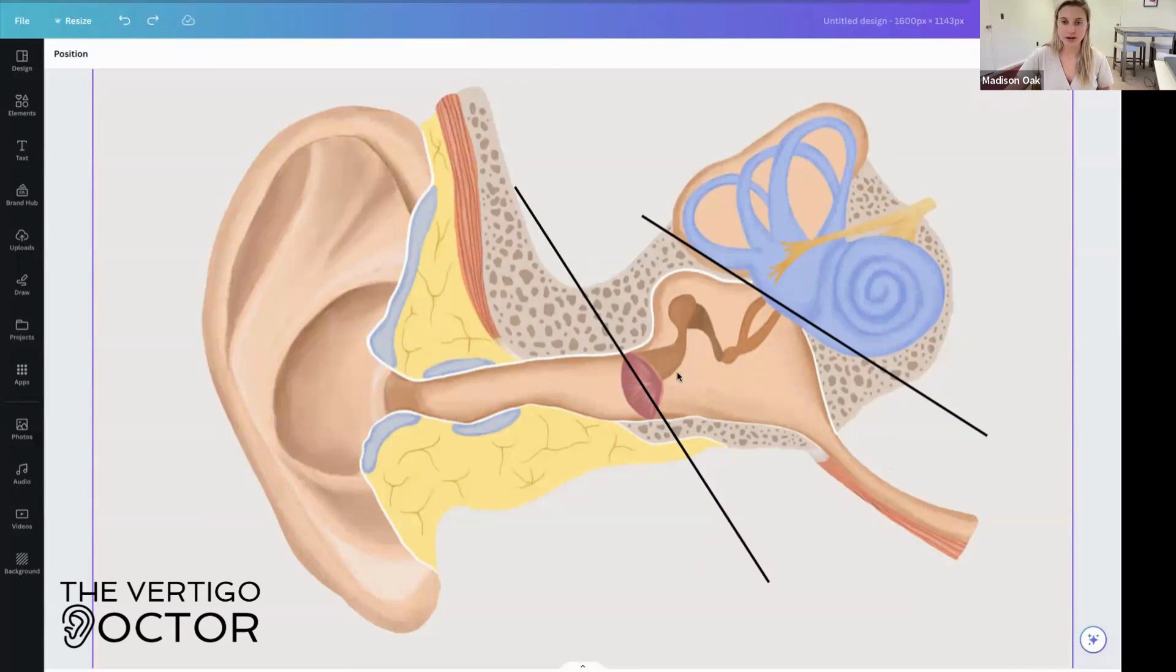Now these little brown pieces right here are your incus, malleus, and stapes. And these are the three really teeny, tiny ear bones that will help you hear. It takes the vibrations that are out from your outer ear and pushes them in towards your cochlea through your middle ear into the inner ear.